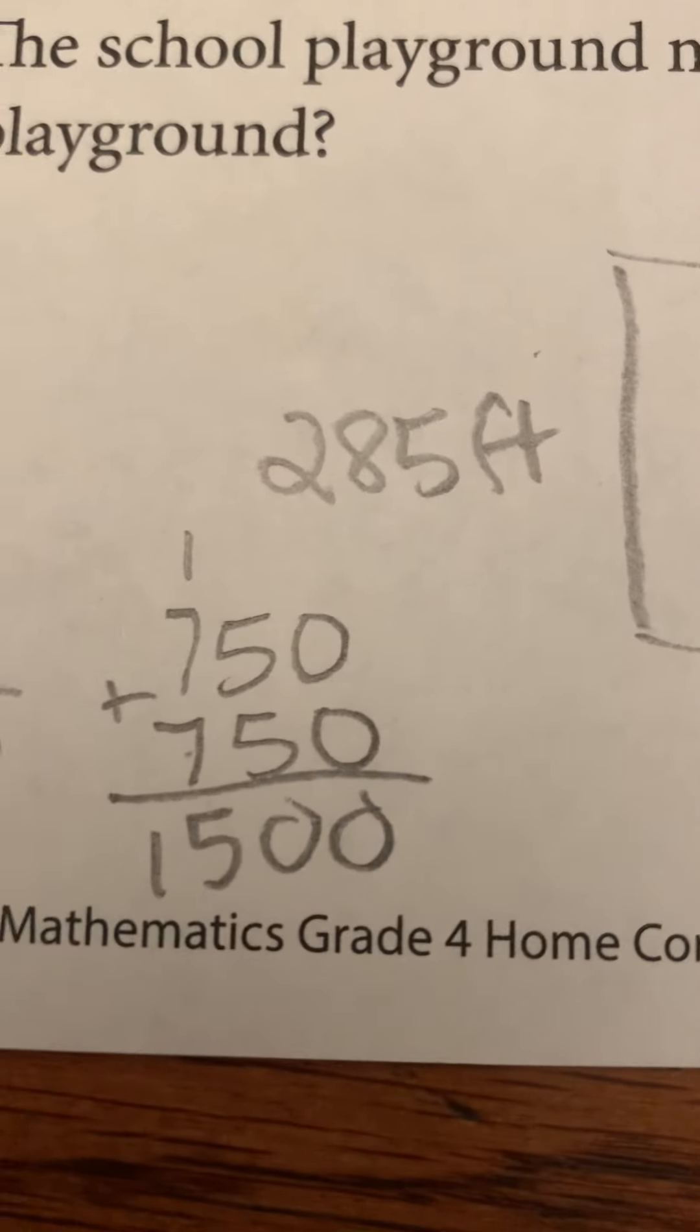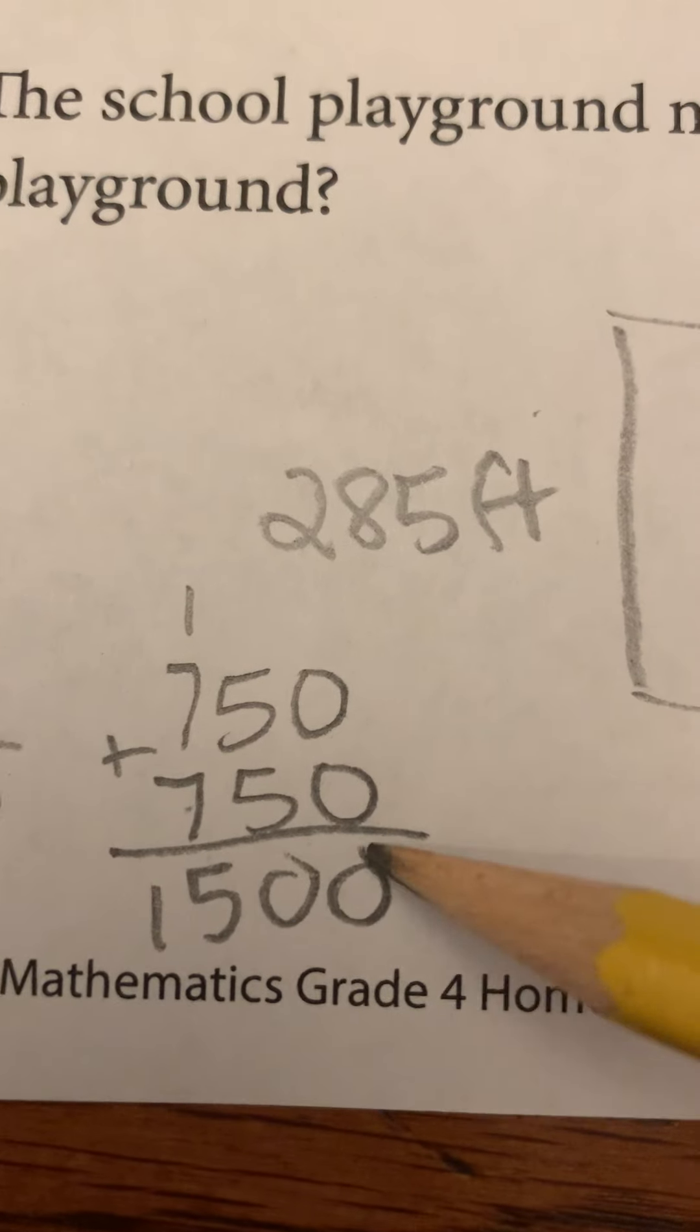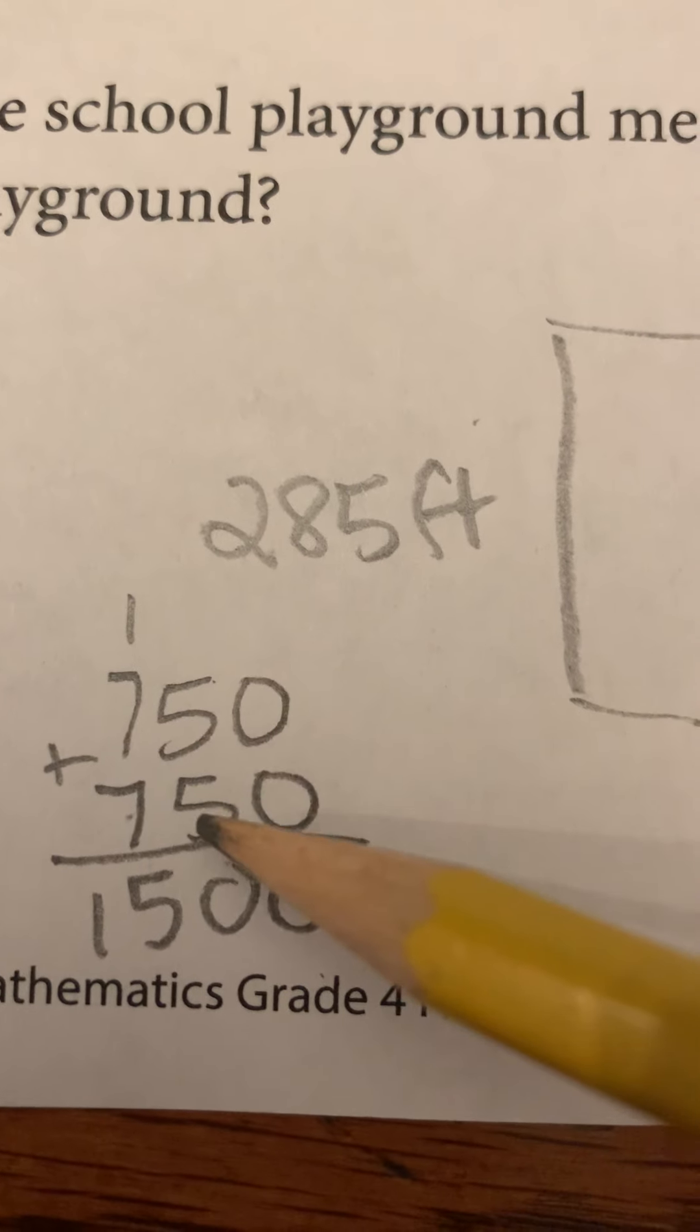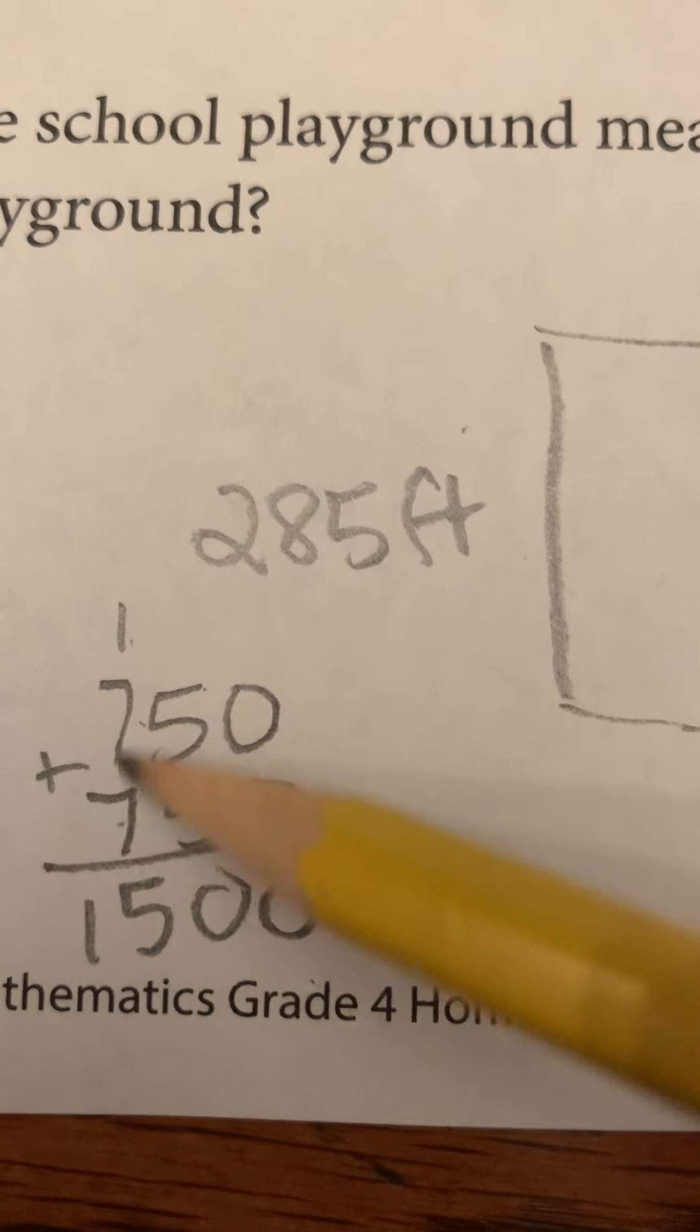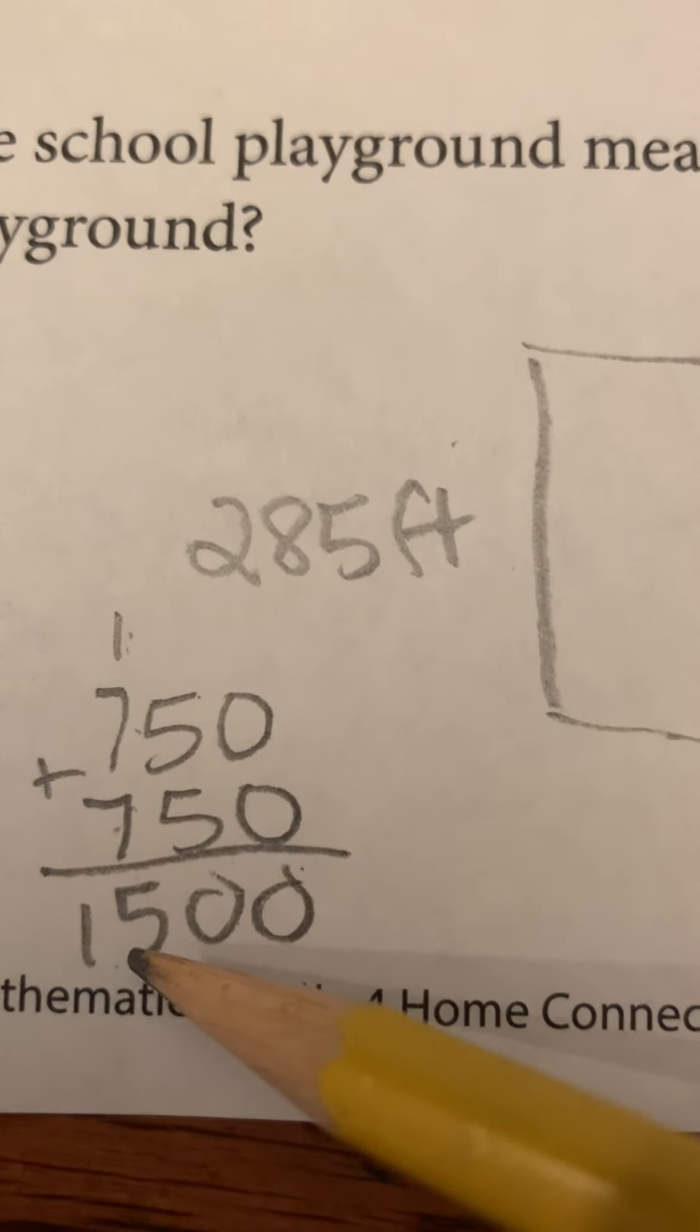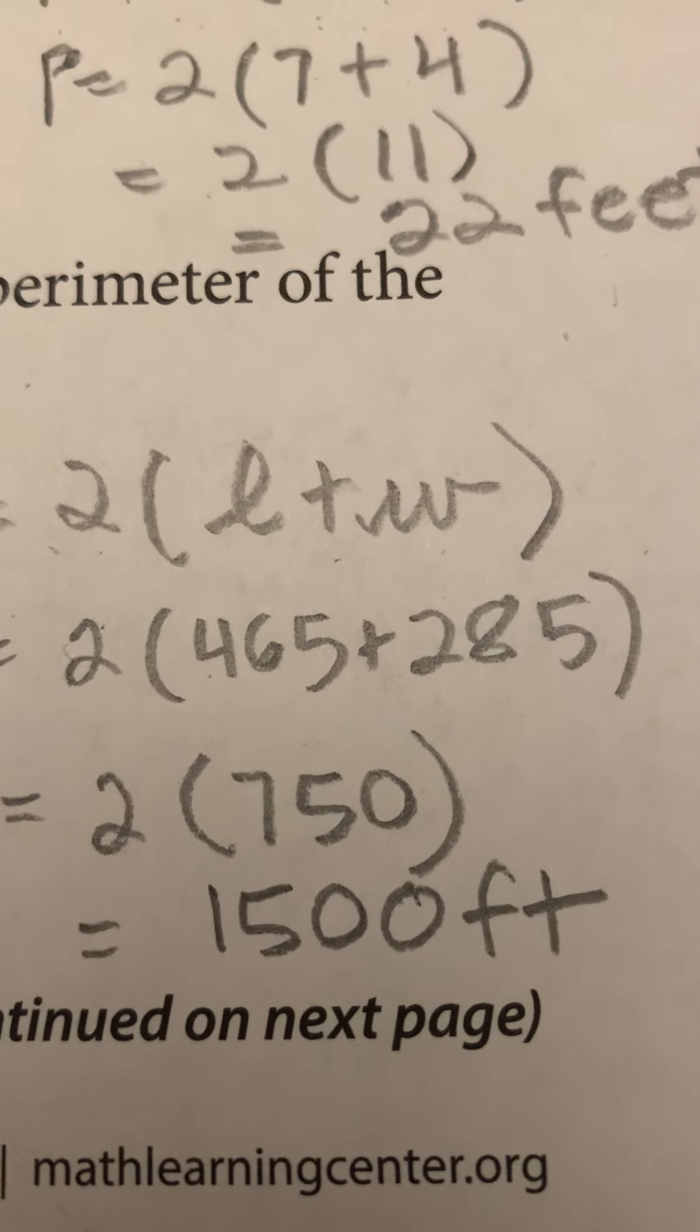Or you might've had to go 750 plus 750. Zero and zero is zero. Five tens. Five tens is 10 tens. Carry the hundred. Seven and seven is 14 plus one is 1500. And so your answer is 1500 feet.